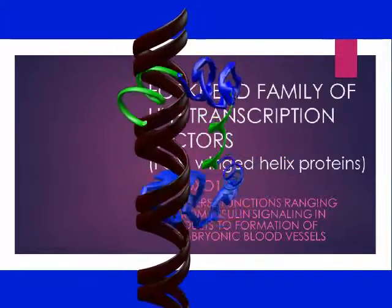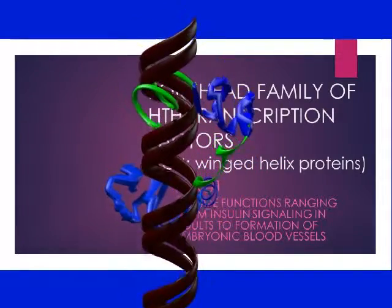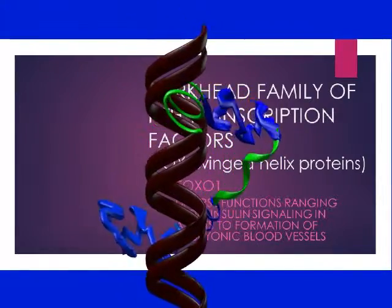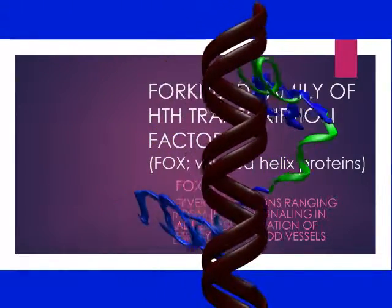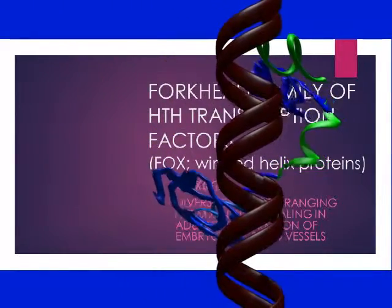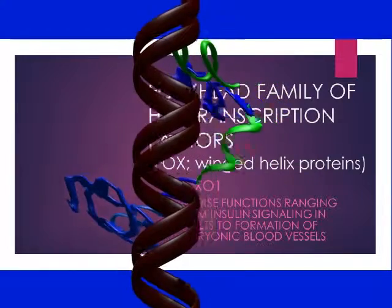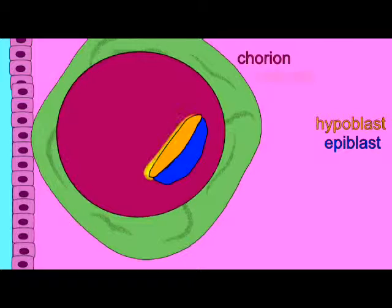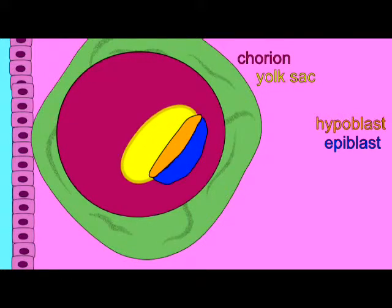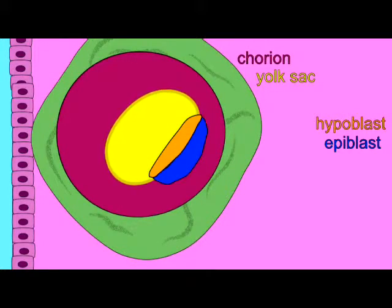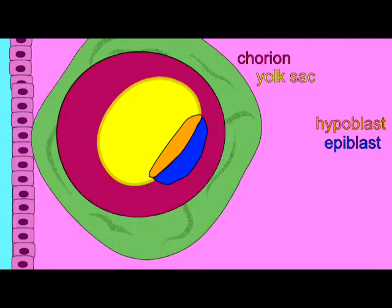The FOX-O1 transcription factor HNF3-beta plays a number of roles, including the development of blood vessels throughout the body and in the yolk sac. Mutant mice die early in development.